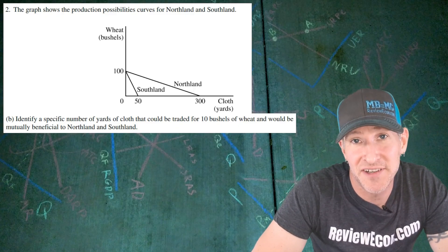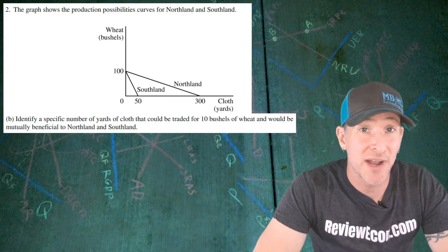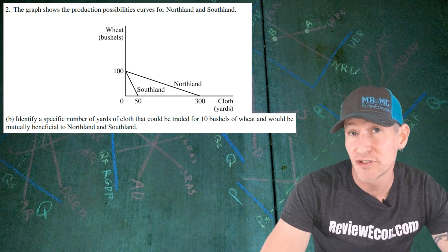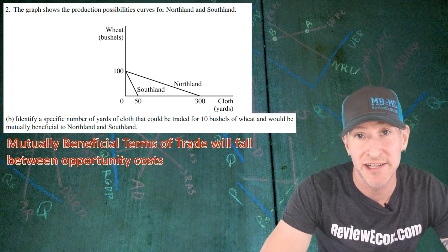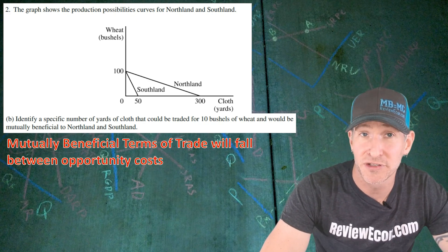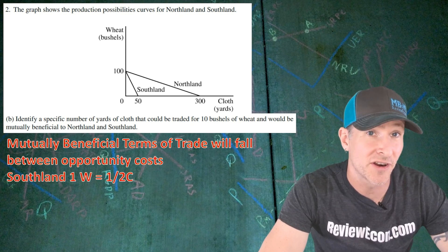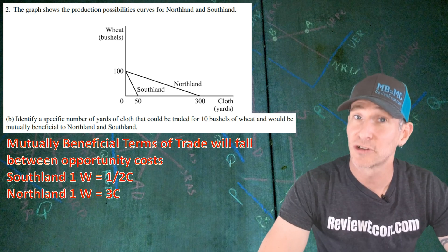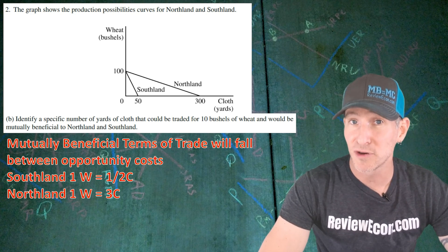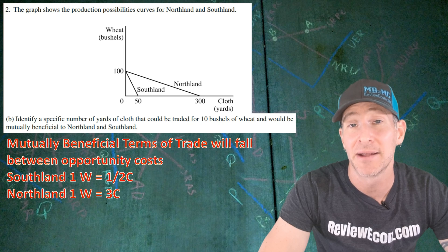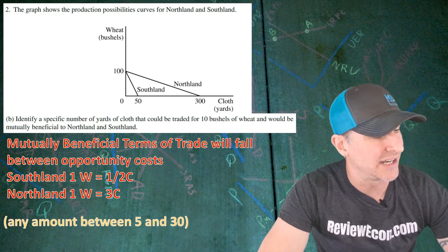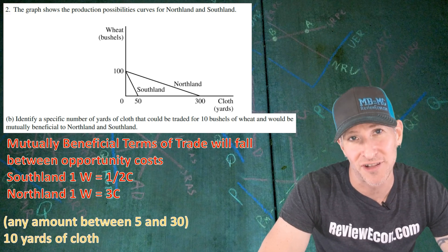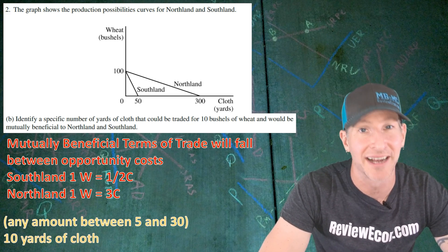For part B, we need to identify a specific number of yards of cloth that can be traded for 10 bushels of wheat, and it must be mutually beneficial to both Northland and Southland. Mutually beneficial terms of trade fall between the two countries' opportunity costs. The opportunity cost for one bushel of wheat was one-half a yard of cloth for Southland and three yards of cloth for Northland. But we're looking for 10 bushels of wheat, so we multiply those opportunity costs by 10. That means any number between 5 and 30 will work. My answer is 10 yards of cloth, but any number between 5 and 30 will get you that point.